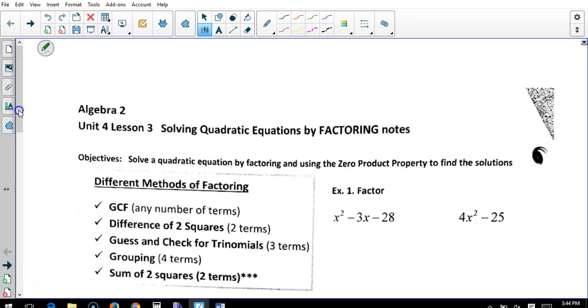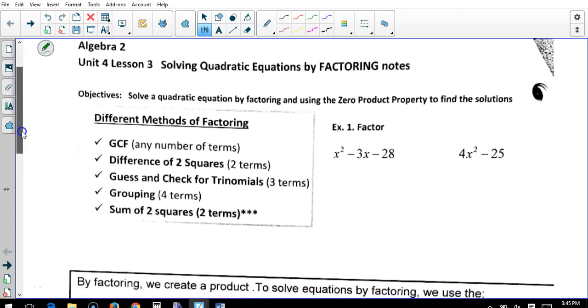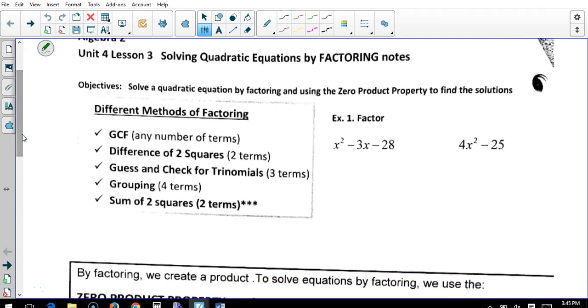Okay, 4.3 solving quadratic by factoring. There's different methods to factoring. GCF goes for any of them - you can take the common factor out of everything to try to make it easier, smaller numbers to deal with. The difference of two squares, we have two terms. Guess and check for trinomials, which is three terms. Don't forget, I do have a video on applying a process for factoring trinomials. Grouping, we have four terms, and a sum of two squares, two terms. We'll get back to that later.